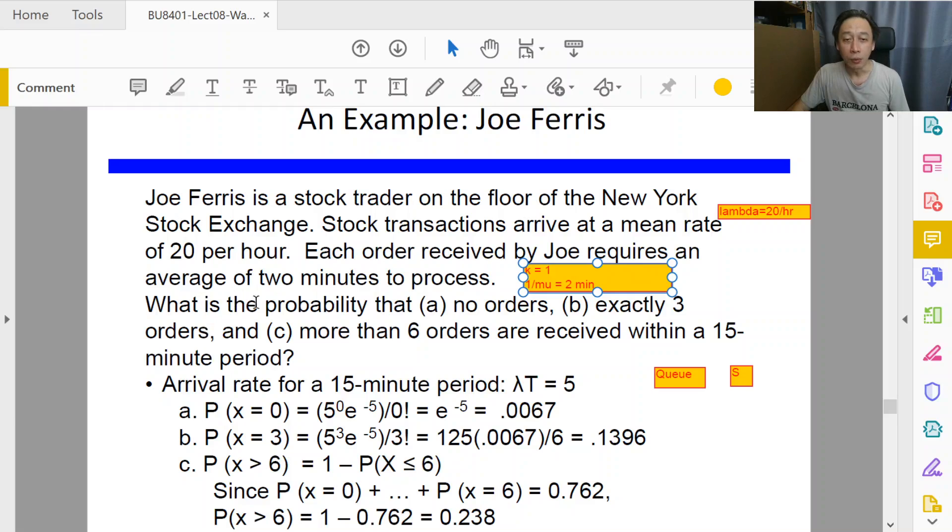Okay, they ask what is the probability that no order occurs within a 15 minute period. No order occurs within a 15 minute period - in other words, no customer arrives within a fixed time span. I'm trying to digest what is being asked here. An order is a customer and we have a fixed time period.